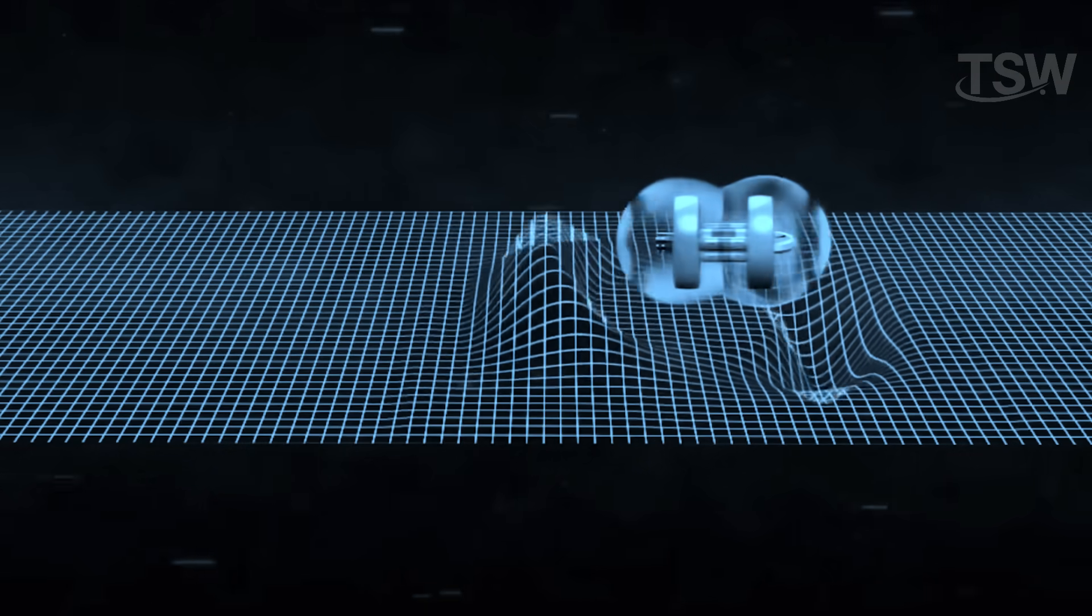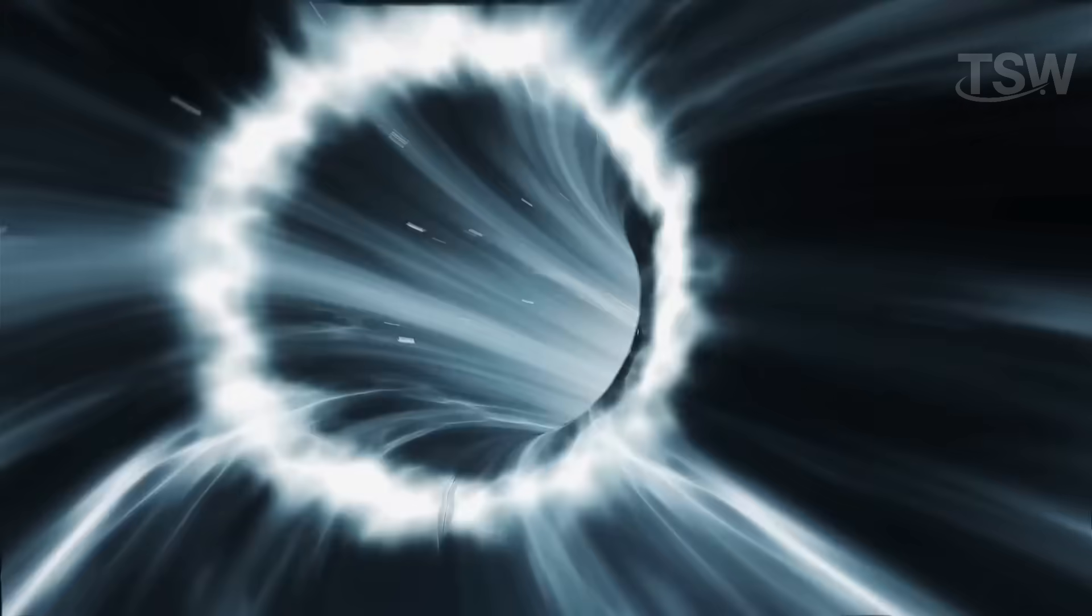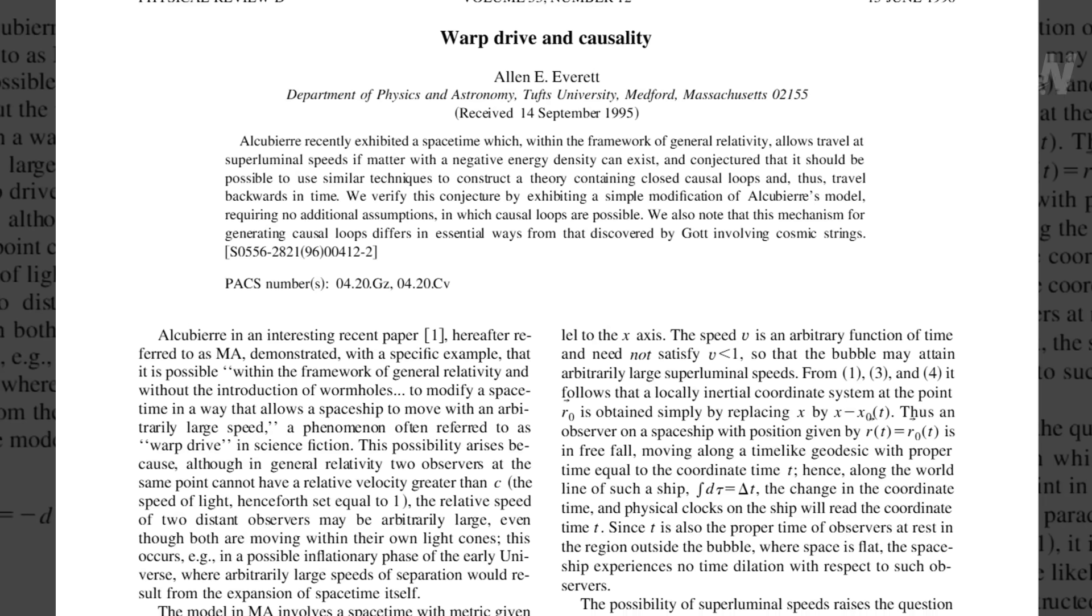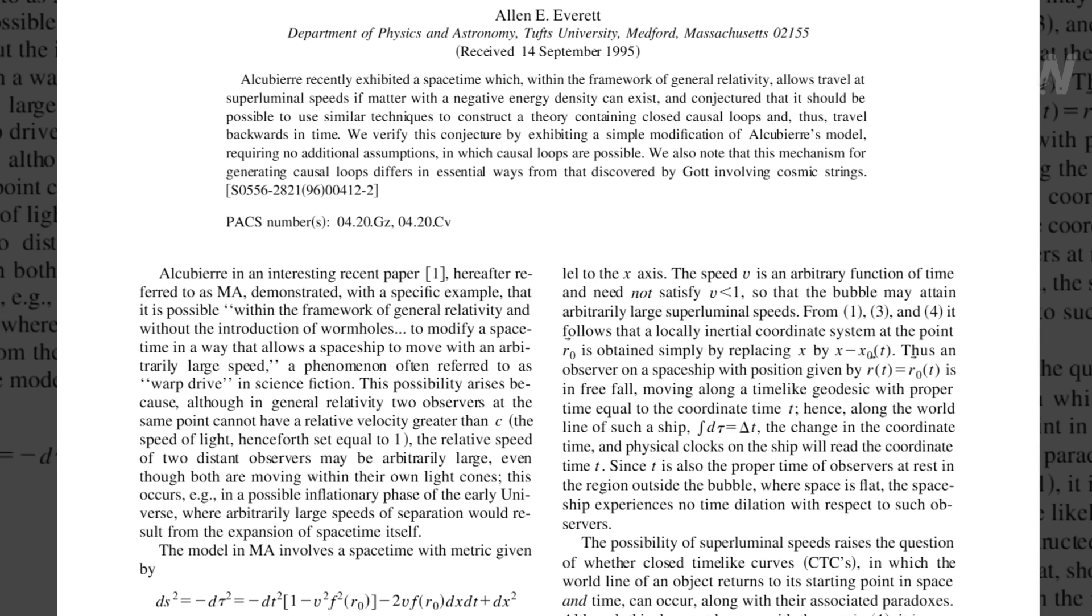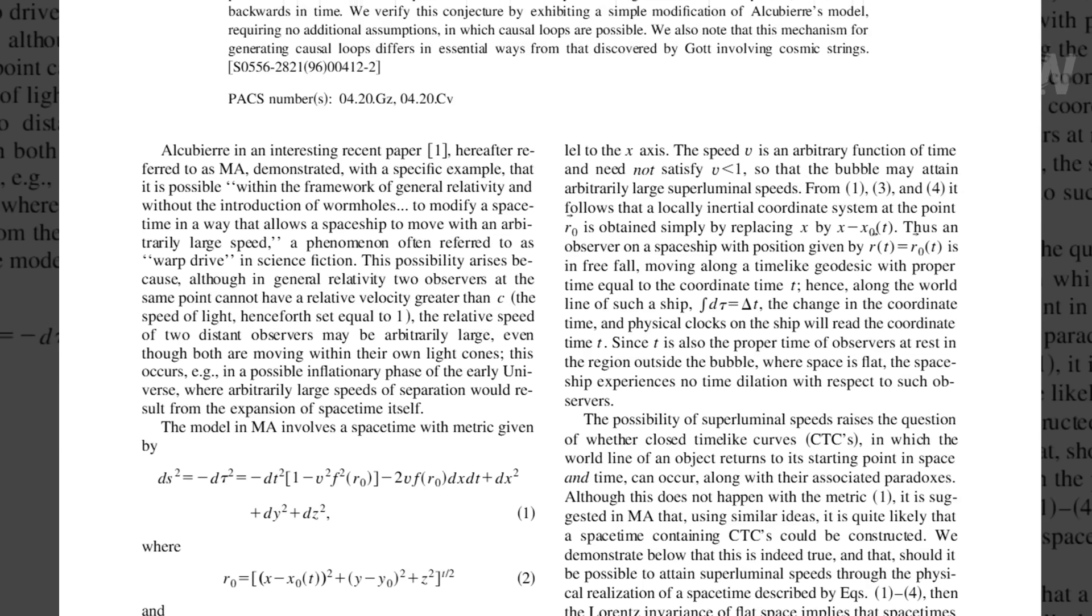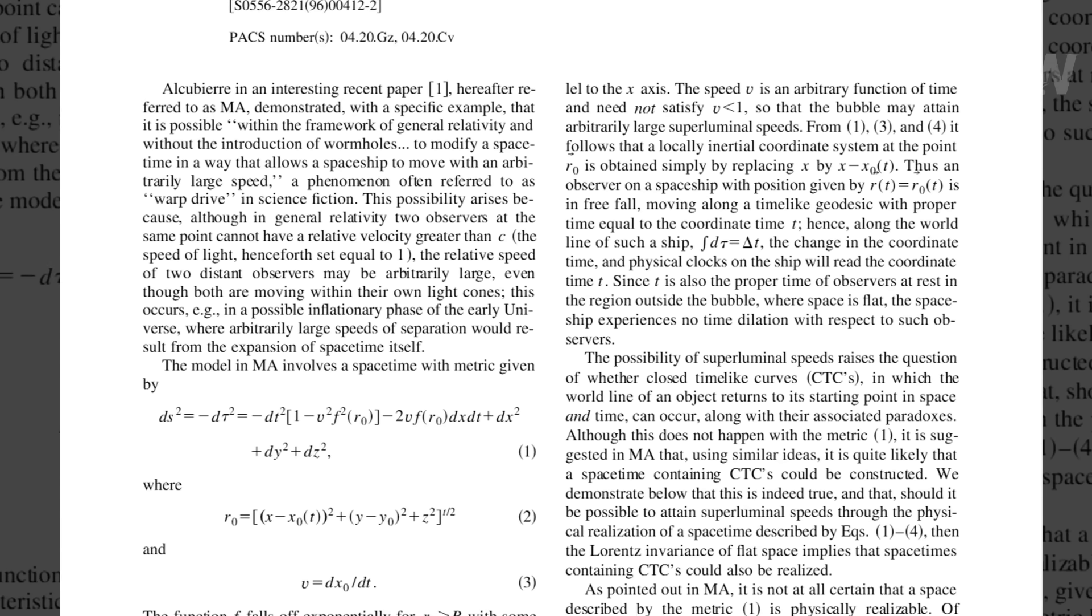Now, here's where things get even more fascinating. And a little more complicated. If warp travel were possible, it wouldn't just allow us to go faster than light. It could also lead to a very strange situation. Time travel. According to some studies, particularly a paper published by physicist Alan Everett, if you had two warp bubbles traveling in opposite directions at near-light speeds, the difference in time between the two could create a closed time loop. This means, in theory, that you could go back in time.